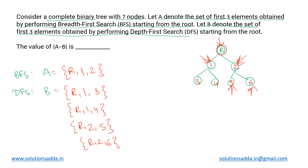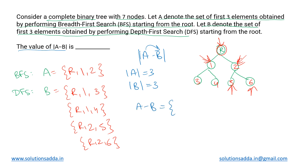Now they are asking for the value of |A - B|. This symbol represents cardinality, not modulo. The cardinality of both sets A and B is three, each having three elements. If we take the set difference A minus B, what will be the cardinality of the resulting set? In all four possible sets B, every one of them contains the root r, so r will definitely cancel out.